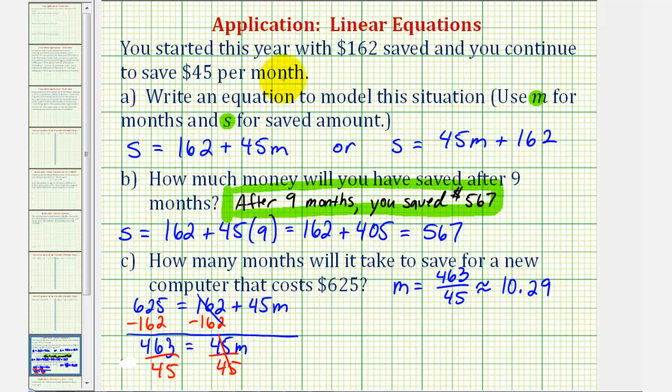But because we're saving money per month, notice after 10 months, we would not have enough money for the computer. So we'd have to wait until the next month, or the 11th month. We'd actually have to round this up to the next whole number, or 11. So it will take 11 months to save enough to purchase the computer.